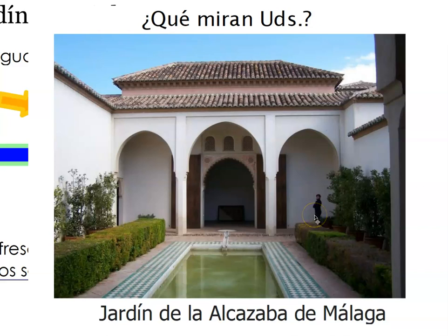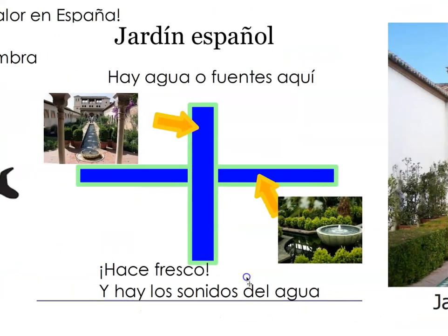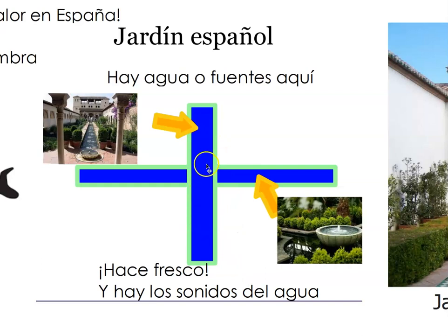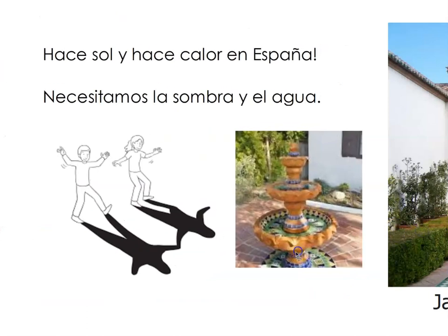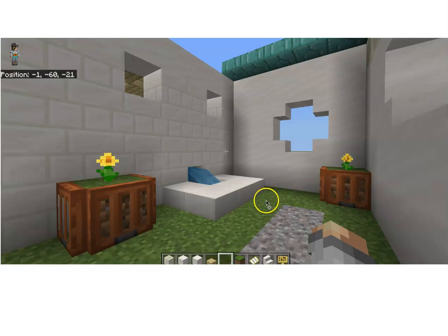I'm going to start with my Spanish classes. I created this big book using techniques from Guided Language Acquisition Development and TPRS — Teaching Proficiency Through Reading and Storytelling. We had been reading the book, looking at examples, and students came to understand that there must be water in a classic Spanish garden, it has to go in cardinal directions, it's very hot so they need shade, and a bunch of other rules.